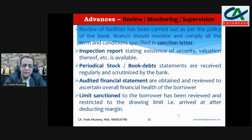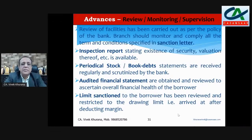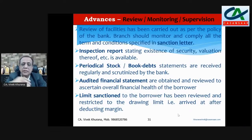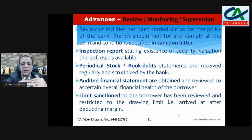The bank manager should do timely inspection regarding the security and valuation report whenever needed. For cash credit limit, where security is stock and book debts, check whether the bank is getting stock statements regularly. Based on stock statements, check the drawing power. Also check whether the borrower has provided audited financial statements. If any limit has been reviewed or changed, it should be restricted to the drawing power limit after deducting margin. Also check sales, turnover, gross profit, net profit, and capital of the borrower for any drastic declining trend compared to the previous year.